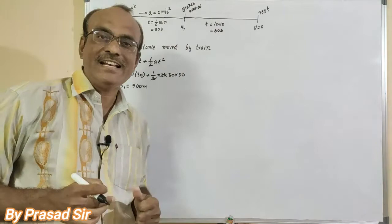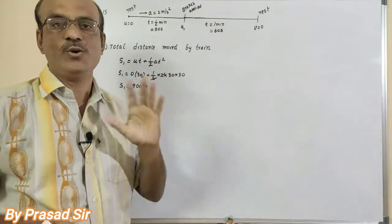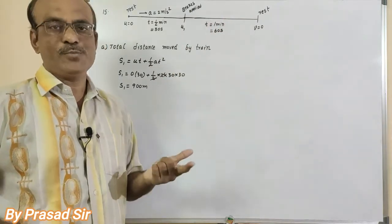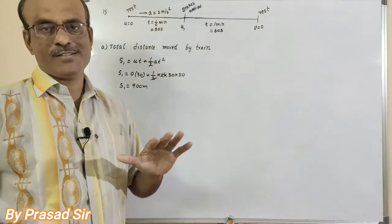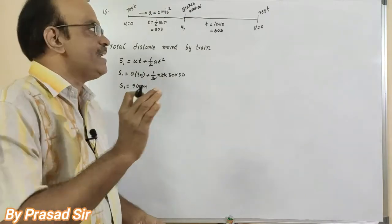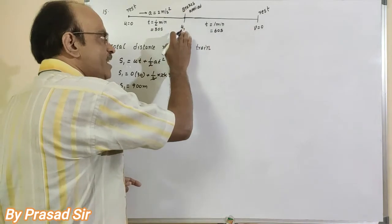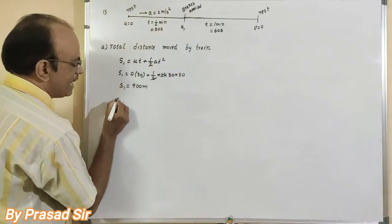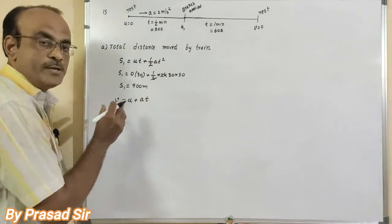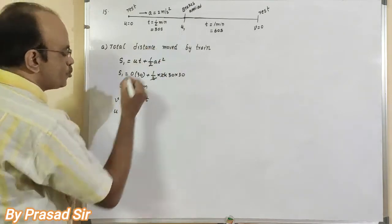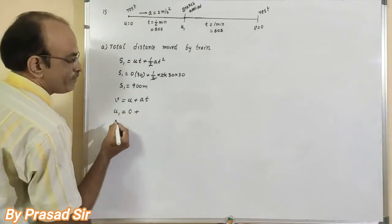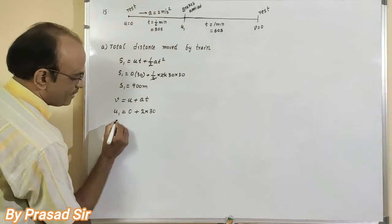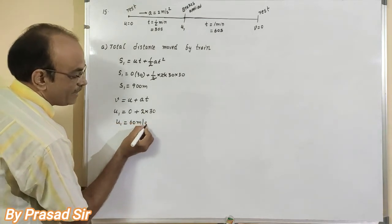To calculate the distance for the second part, we need to know the velocity and acceleration. We check the three equations of motion: v = u + at has no distance; s = ut + ½at² has distance; v² - u² = 2as also has distance. First, let's calculate the velocity using v = u + at. So v = 0 + 2×30, giving u1 = 60 meters per second.